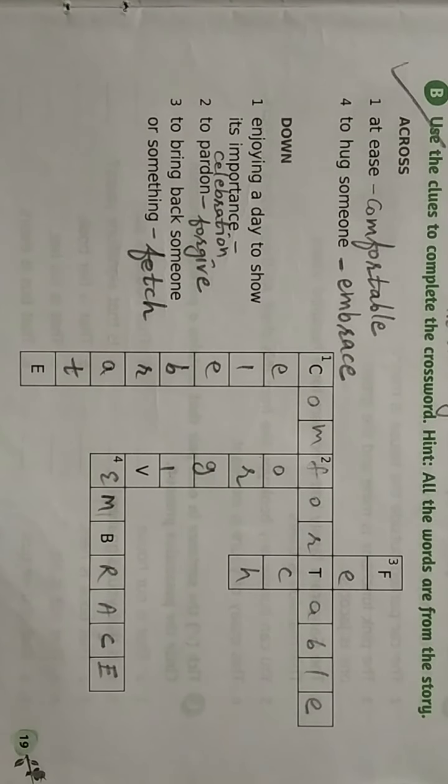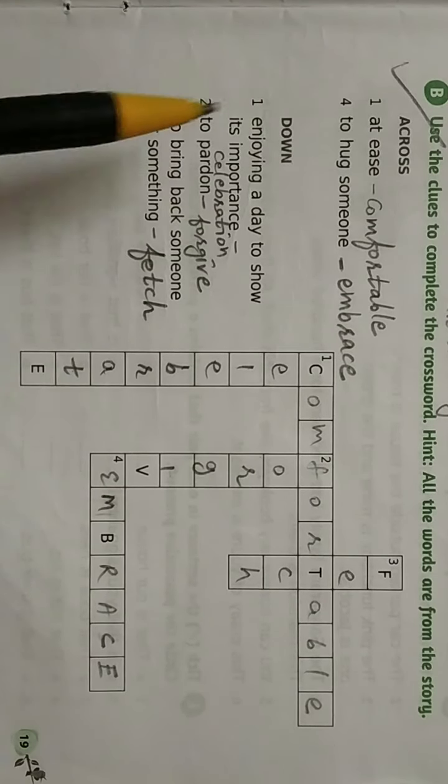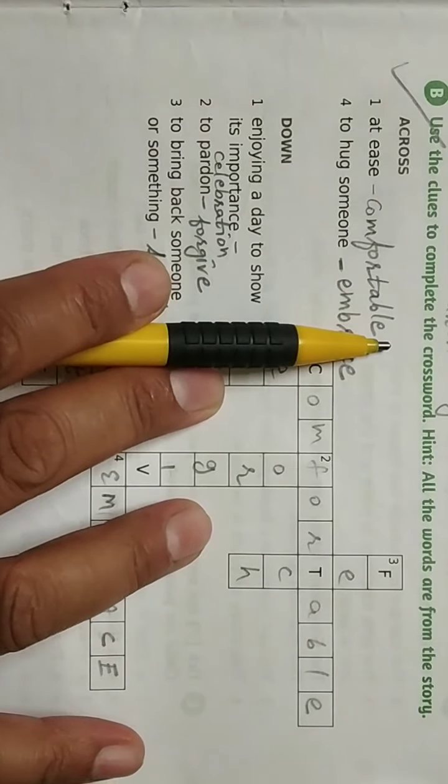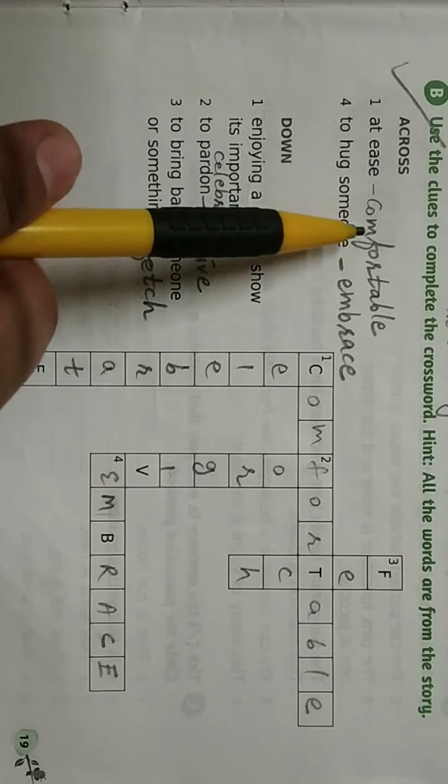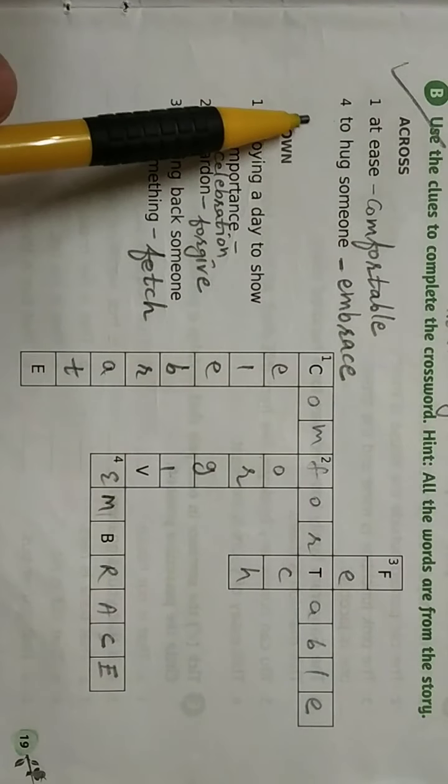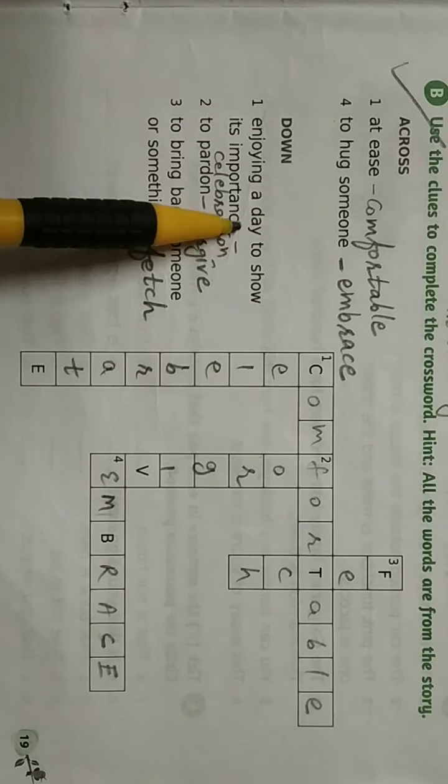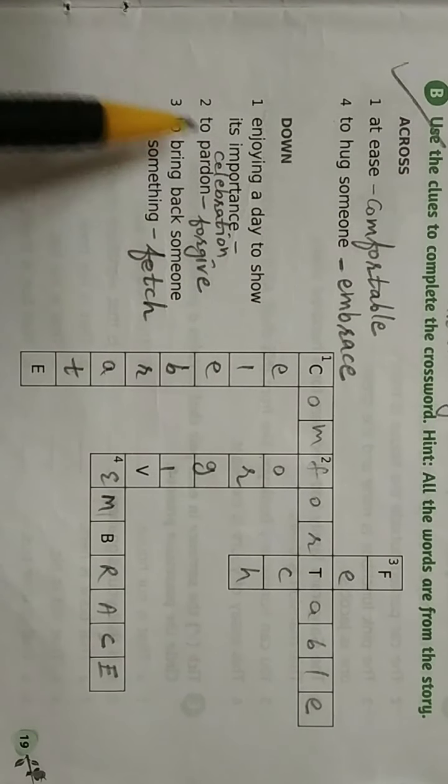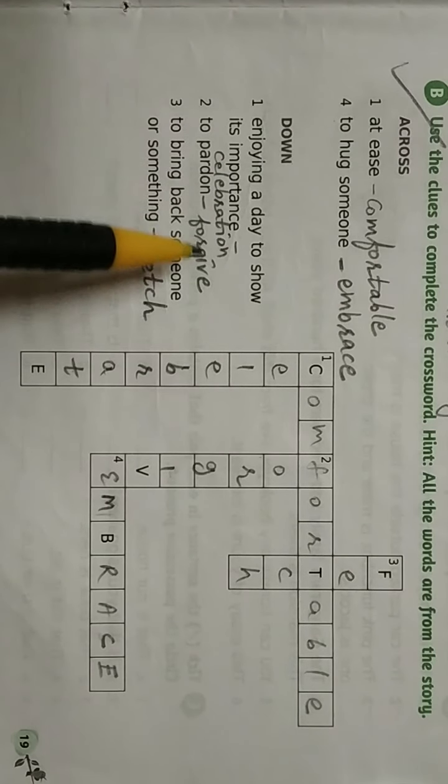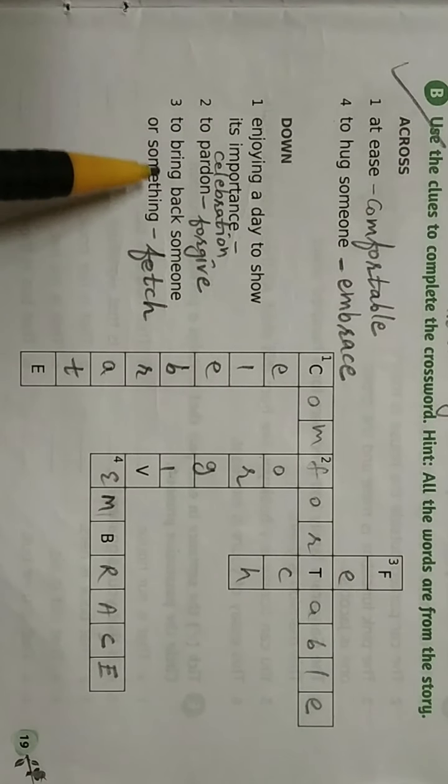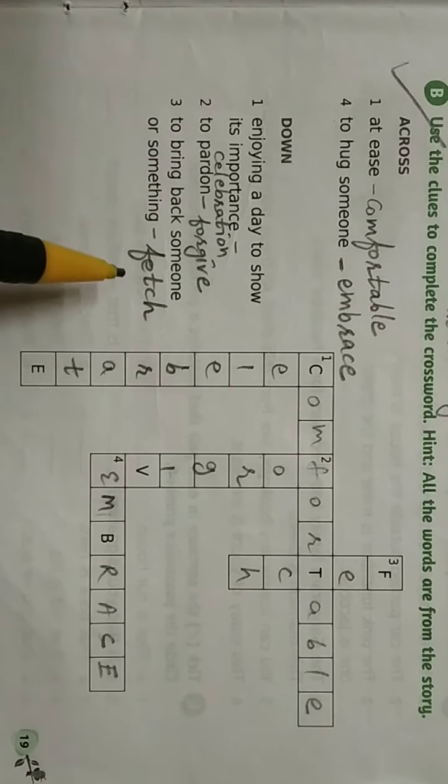Your B question is: Use the clues to complete the crossword. Hint: all the words are from the story. At ease means comfortable. To hug someone: embrace. Enjoying a day to show its importance: celebration. To pardon: forgive. To bring back someone or something: fetch.